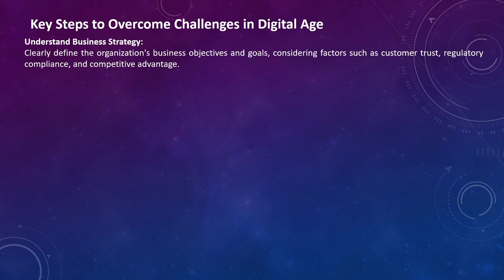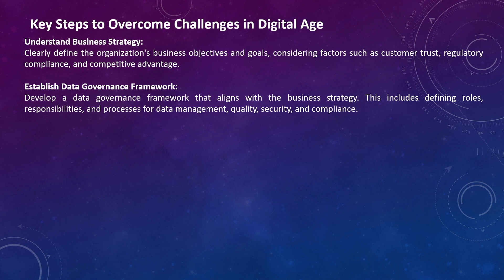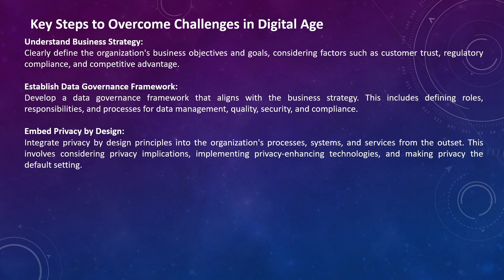What are the key steps we can take to overcome these digital challenges? We need to flip the way we work — the way we've been working for the last 30 years. We need to clearly understand our business strategy, define organizational business objectives and goals — what we want to do for the customer, what we want to achieve for our stakeholders — and understand the regulatory landscape and what competitors are doing. Based on that, you build your data governance framework: what data do I need to achieve those business objectives? Then your strategy should embed privacy by design — not afterwards. Solution architects should be engaged at the initial stage to ensure privacy is embedded in design.